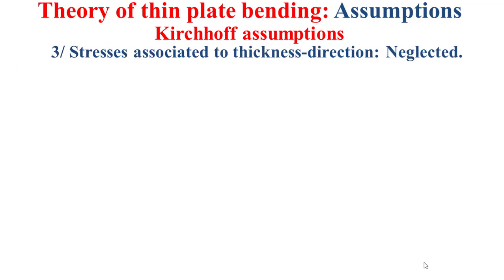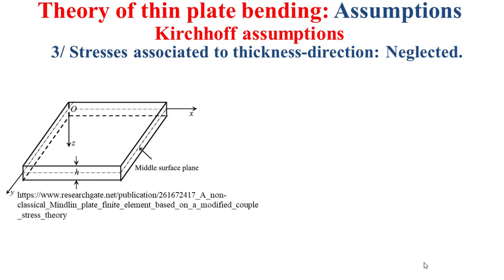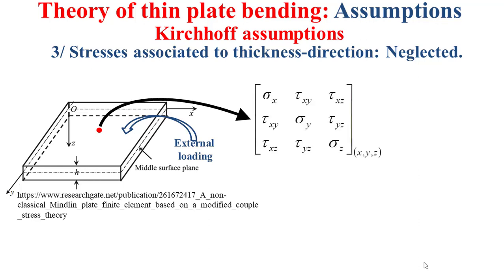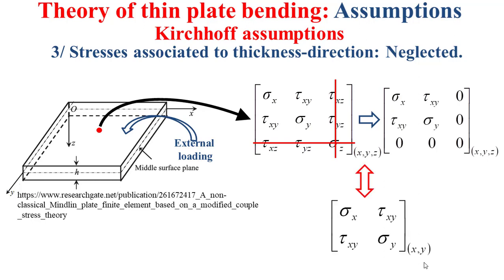The third assumption states that the stresses associated with the thickness direction should be neglected. The thickness direction is the z direction. If the plate is subjected to external loading, we have internal stresses at any point. We consider a point depicted in red — the stress state in this point is defined by the stress tensor, as explained in a previous video. The third assumption states that the stresses associated with the z direction should be neglected, and we obtain finally a 2D stress state as indicated in this slide.